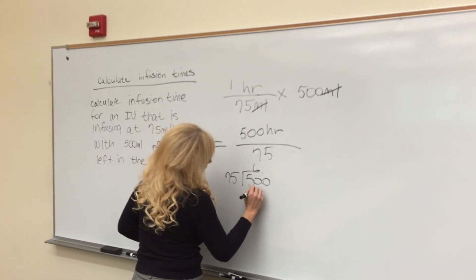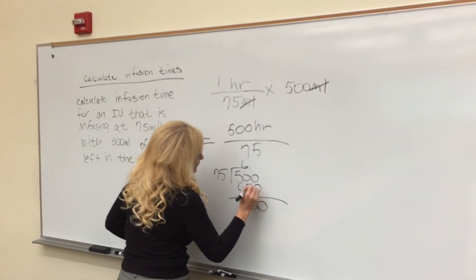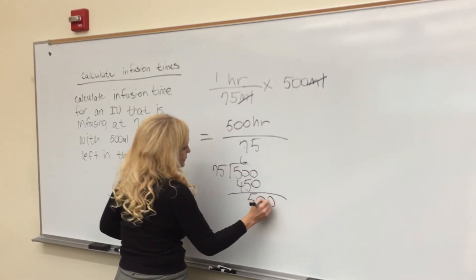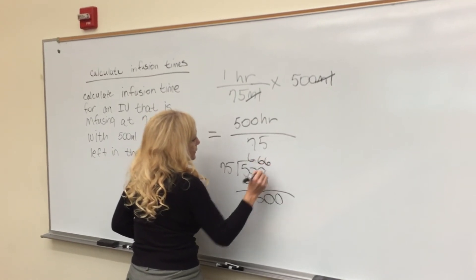That's 450, and then we're going to bring this down. It's going to be 500 again, we're going to put a decimal there, another zero, and that's going to be six again, so that's a repeating number. So the hours are going to be 6 hours.